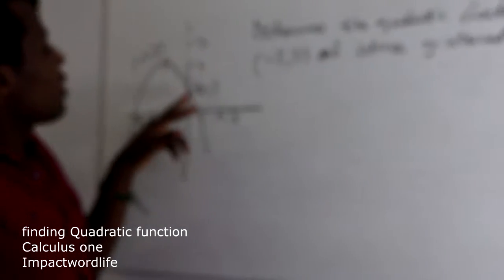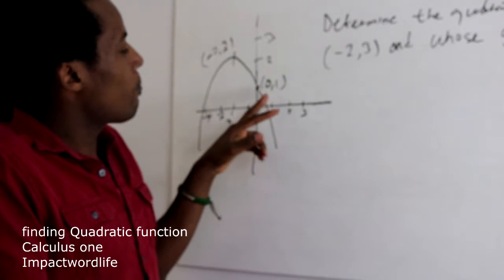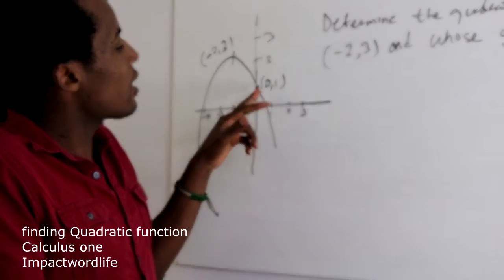So today, here, we can see that our vertex is negative 2 and 3, and our Y-intercept is 0, 1.